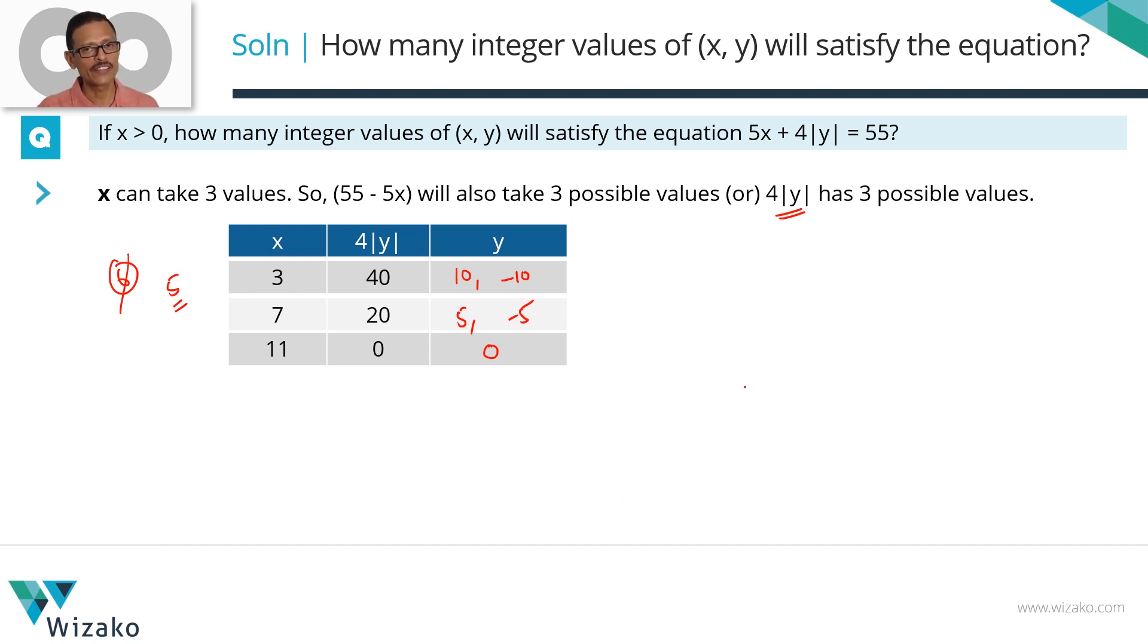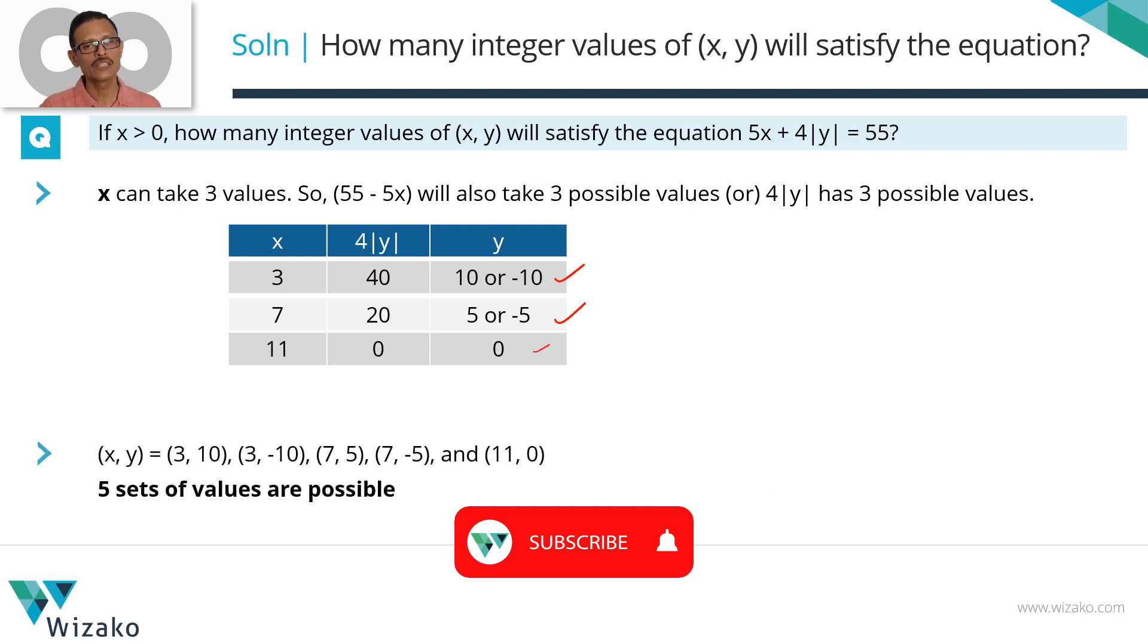So how many possible combinations do we have for x and y? These are the following combinations. It could be (3, 10), it could be (3, -10). Two values when x = 3. Two values when x = 7: (7, 5) and (7, -5). The last one is when x = 11: (11, 0). So five possible values are available for (x, y) satisfying all of the conditions that are mentioned. These two have two values for y, positive and negative. When |y| = 0, y can take only one value which is 0. So these are the five values listed down. Choice C is the correct answer.